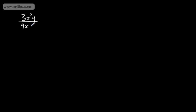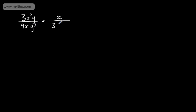We might be asked to simplify the fraction 3x squared y divided by 9xy cubed. If we first consider 3 divided by 9, that gives 1 over 3 — we can just put 3 in the denominator. x squared divided by x gives x in the numerator. y over y cubed gives y squared in the denominator. So our fraction is going to be x over 3y squared.